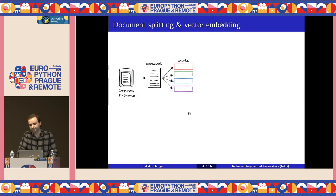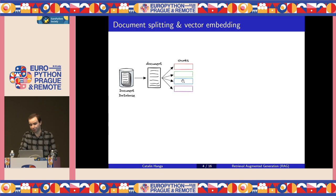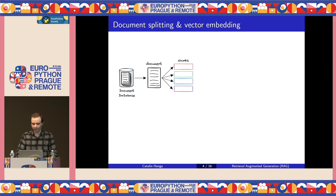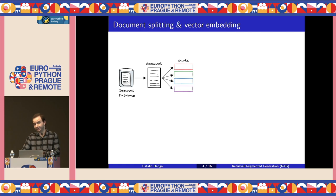Specifically, we have to split every document from the database into smaller fragments of text called chunks. This is necessary because we want to be sure that the LLM will receive only the most relevant pieces of information and not entire documents, which might contain redundant information or be too large to fit in the context window. Ideally every chunk should contain semantically related information, and there are different strategies for splitting — for example, into chunks of fixed equal size, or splitting based on a list of special characters.